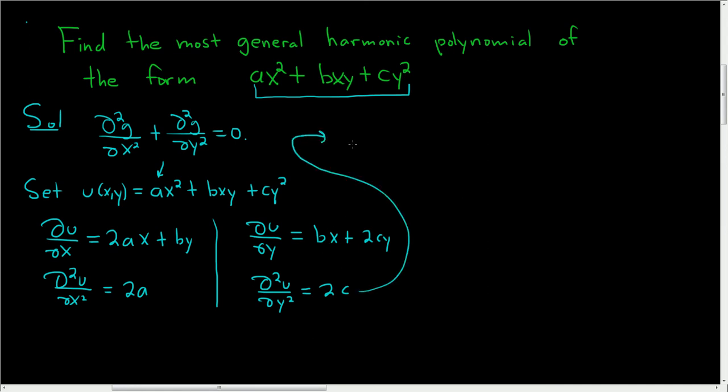So plugging this into Laplace's equation, we have 2a plus 2c equals 0, because we take these guys and we add them and we set it equal to 0. So 2a plus 2c is equal to 0. So that means that 2a is equal to negative 2c. And that means that a is equal to negative c.